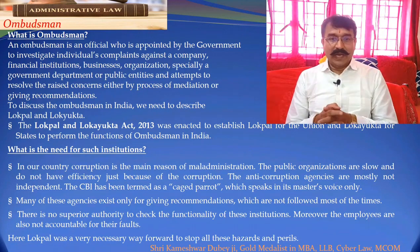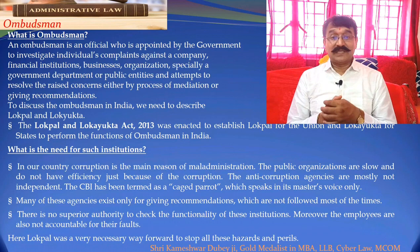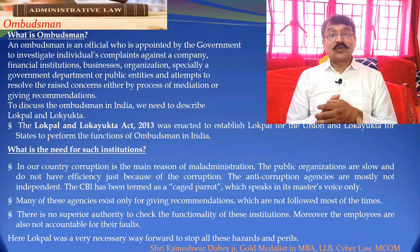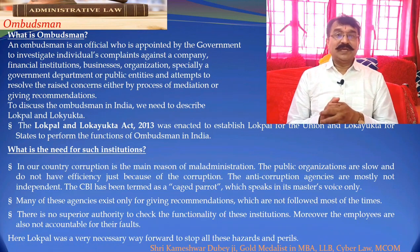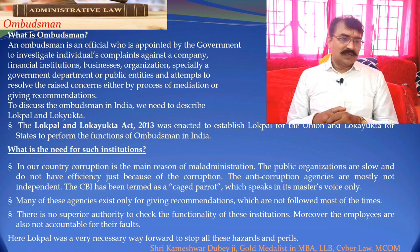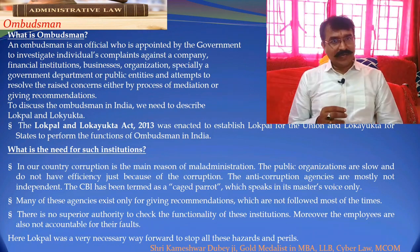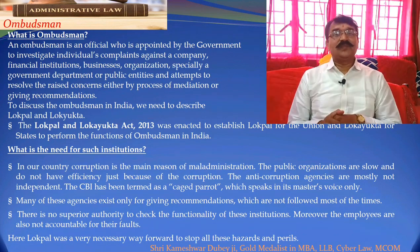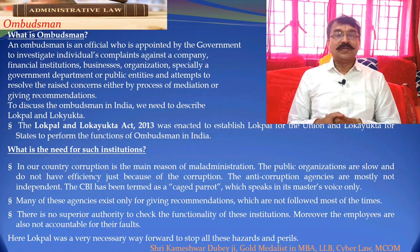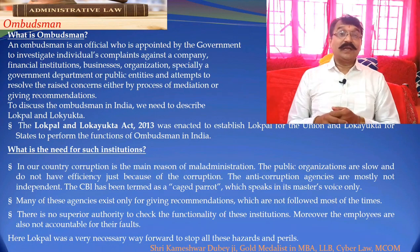The anti-corruption agencies are mostly not independent. Ten years ago it was told that CBI is a caged parrot which speaks in the master's voice only — CBI is under control of the government and generally has to listen to whatever the government says. That is why there was a need for some independent authority. Many of these agencies exist only for giving recommendations which are not followed most of the time. There is no superior authority to check the functionality of the institutions, and employees are not accountable for their faults. That is why the post of ombudsman was created — to overcome the scenario of corruption so that mal-administration can be reduced and better administration can be achieved.